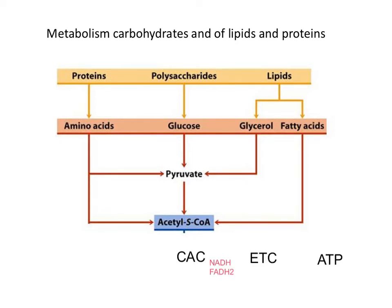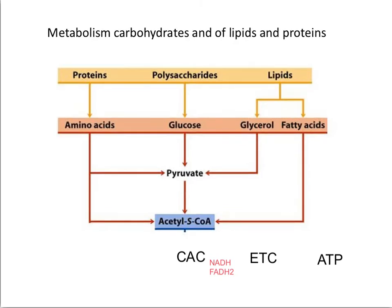After the citric acid cycle, the reduced coenzymes NADH and FADH2 will enter the electron transport chain to create a proton gradient necessary for ATP synthesis.